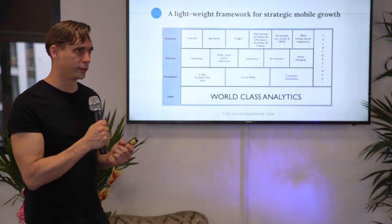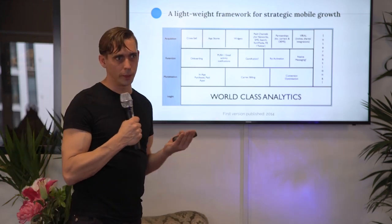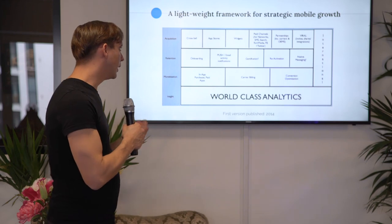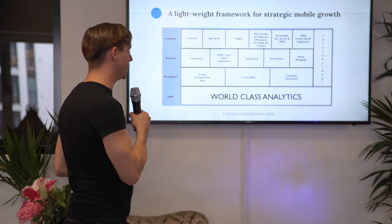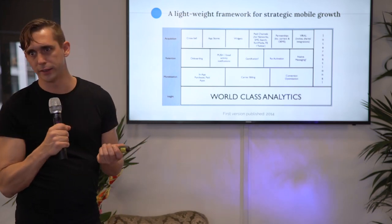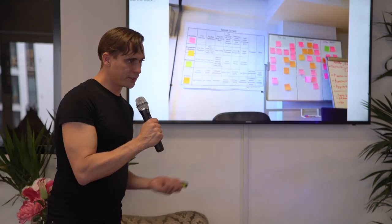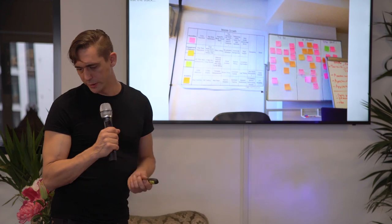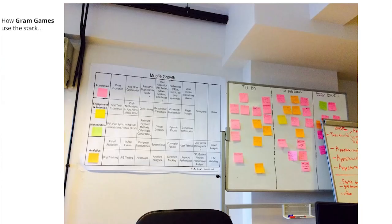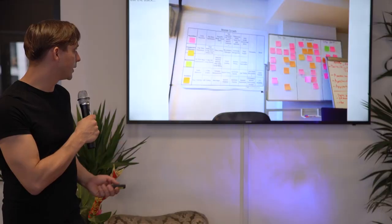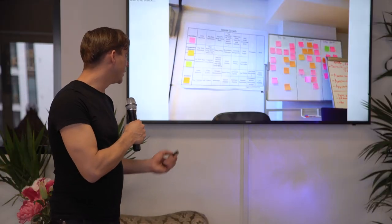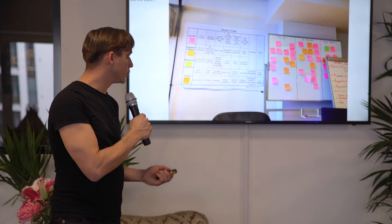It's all underpinned by world-class analytics, which I'll talk about more later when I discuss tech choices for building an app. The basic idea is that if you can't measure things you can't improve them. The mobile growth stack was originally published in 2014, and since then it's been quite widely adopted within the industry. For example, Gram Games uses it to drive the development process of new games at their studio in Istanbul.